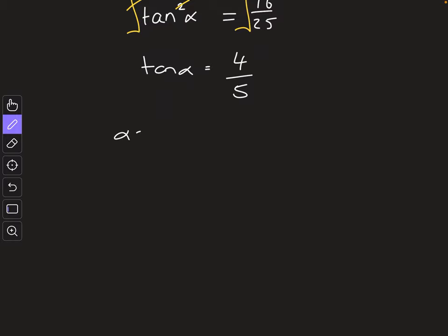Take the tan inverse of that. So alpha equals the tan inverse of 4 over 5. And bada bing bada boom. We should get alpha to be something like 38.66 degrees.